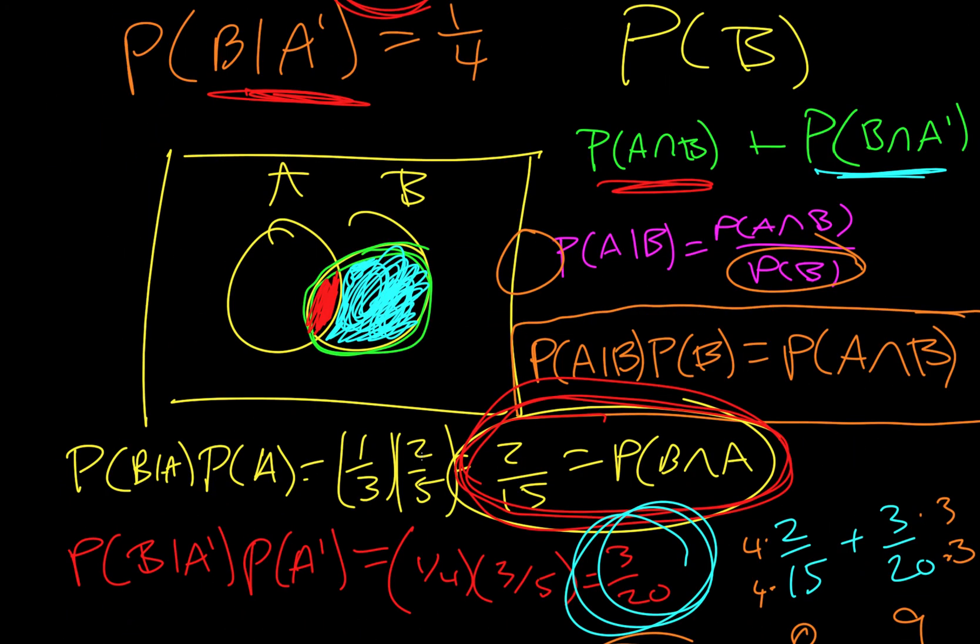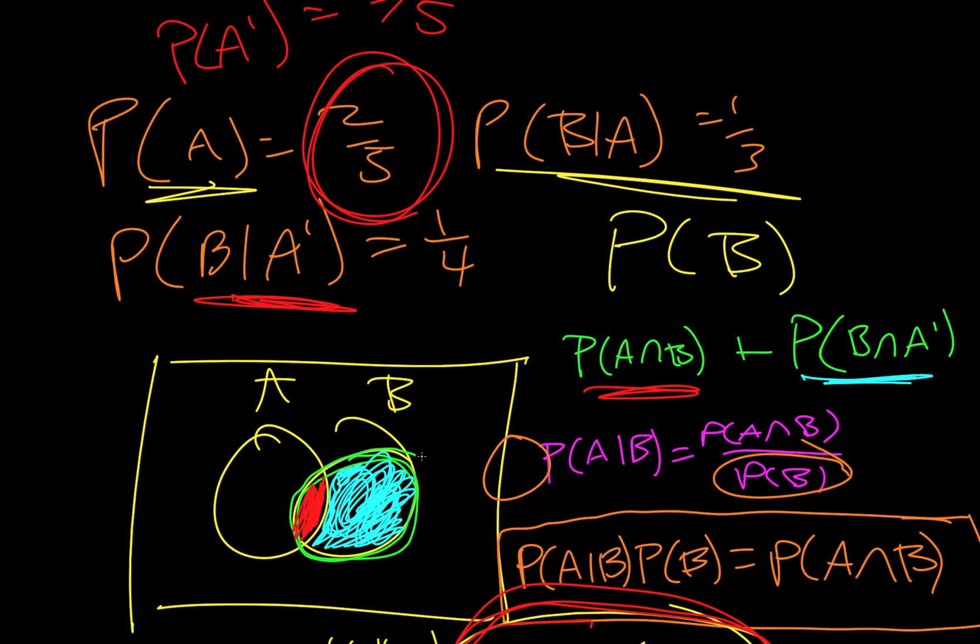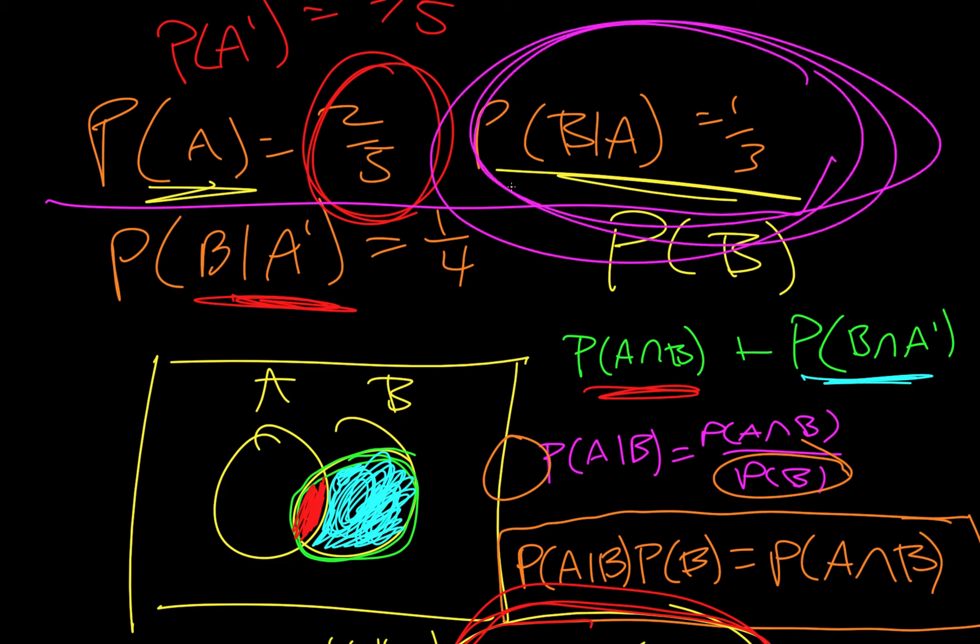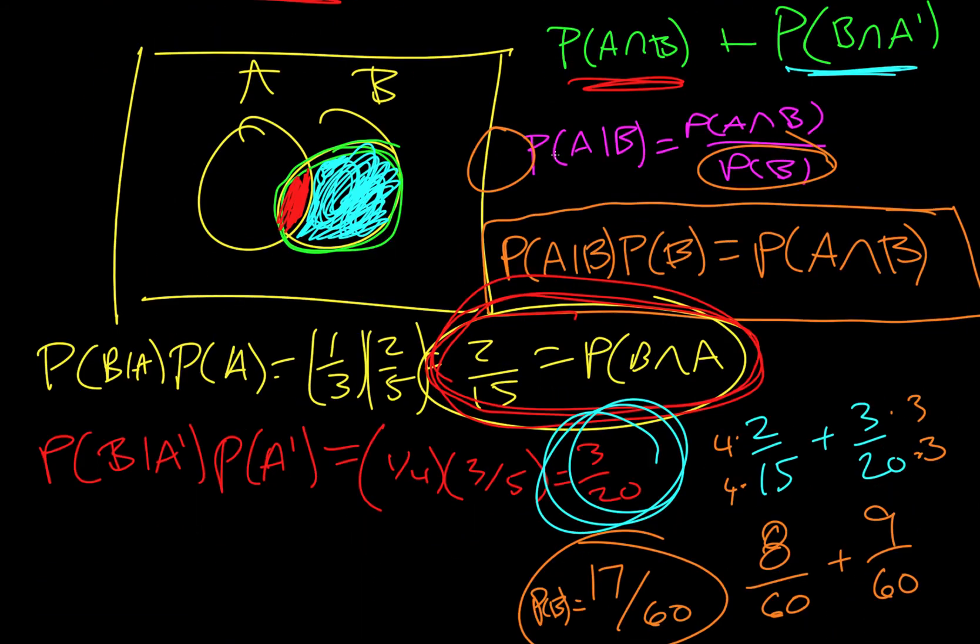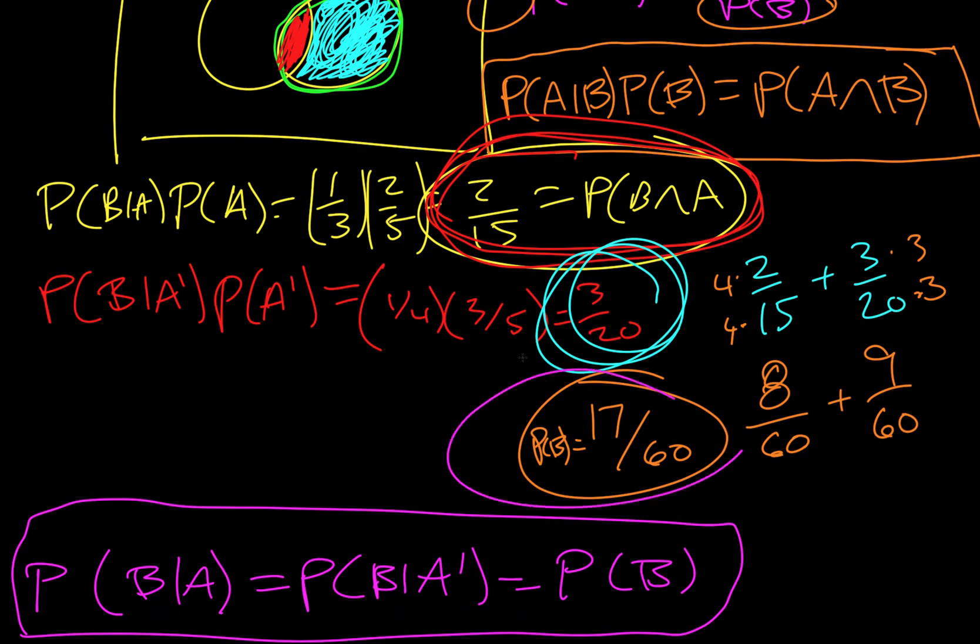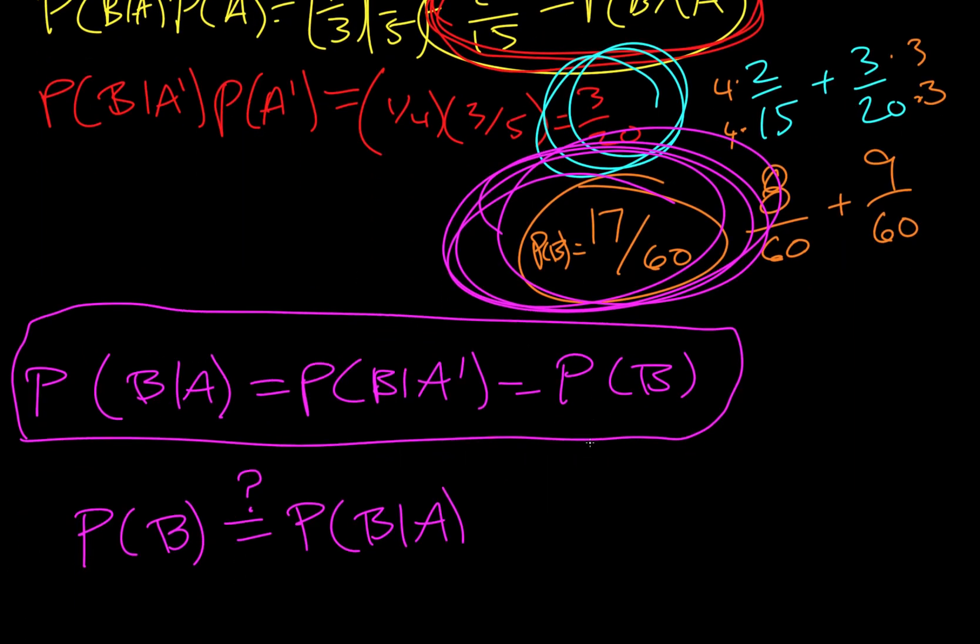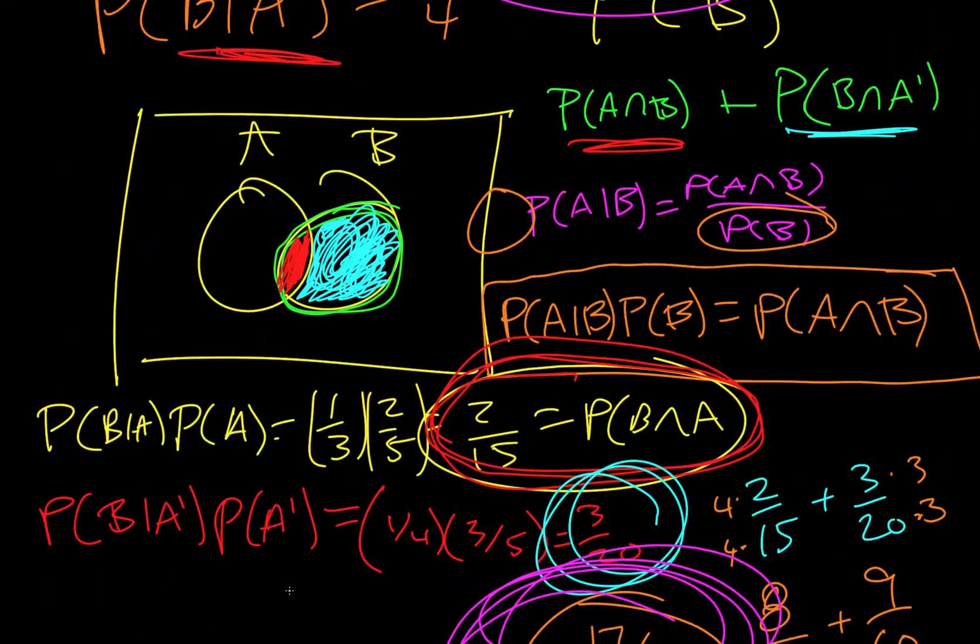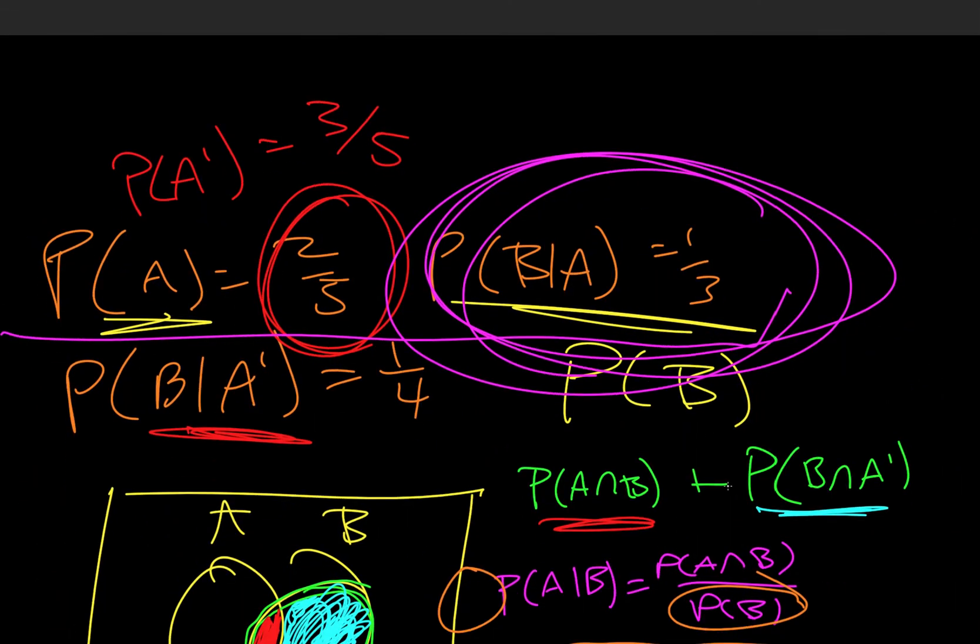So we come up here, these two. So this one and then the answer we just got, this one. So if those are equal to each other, so let's write those down. So this is 17/60 and P of B given A is one third.